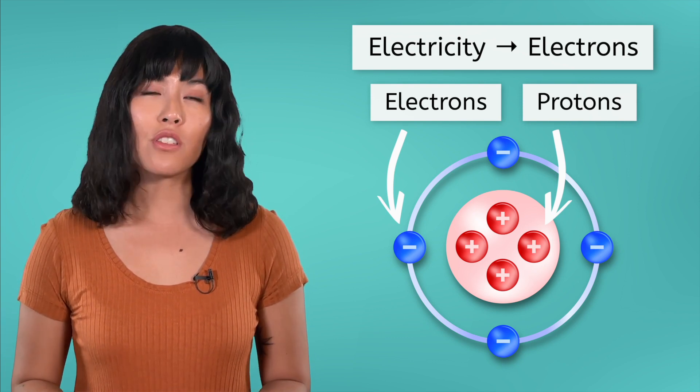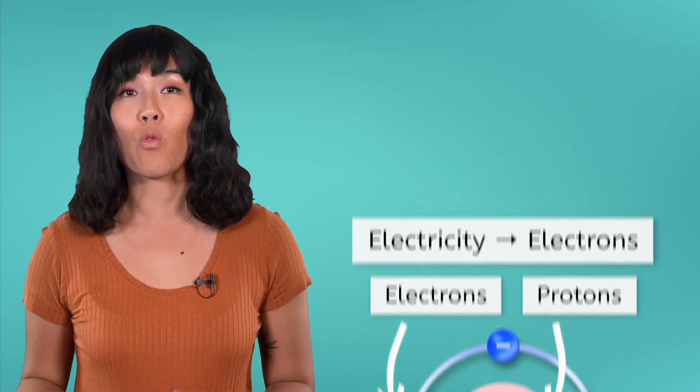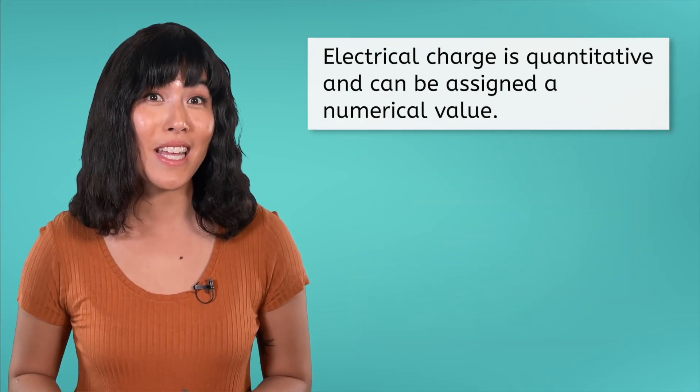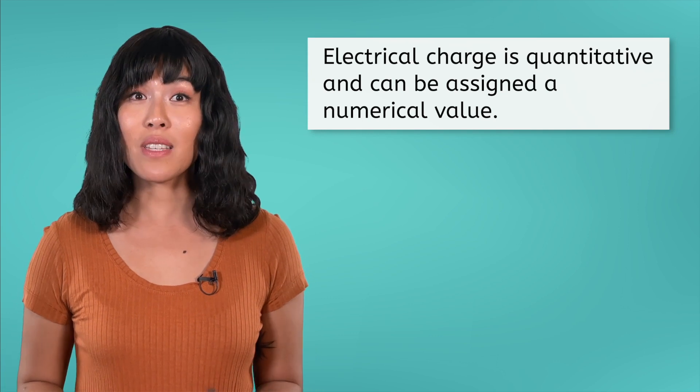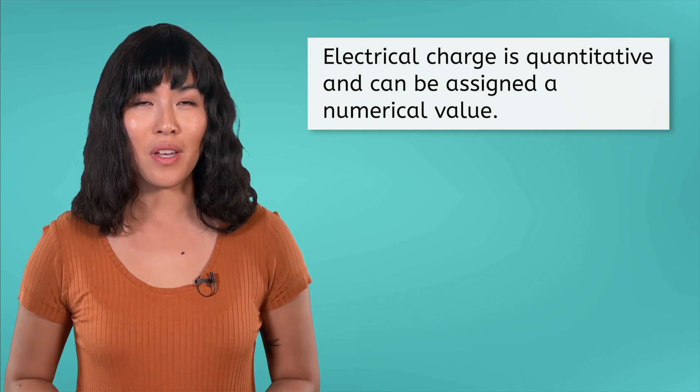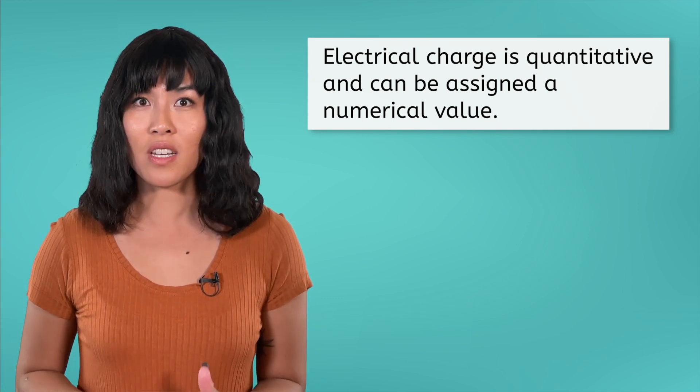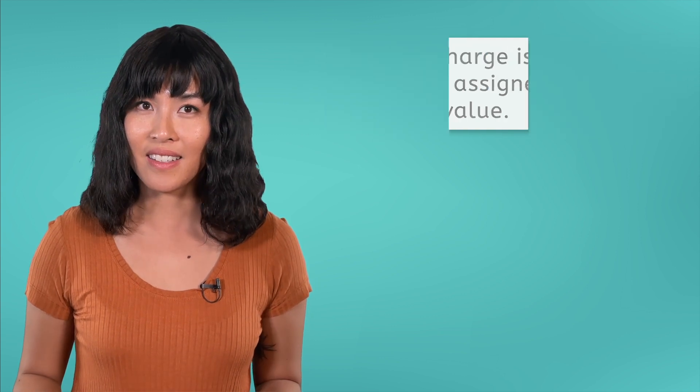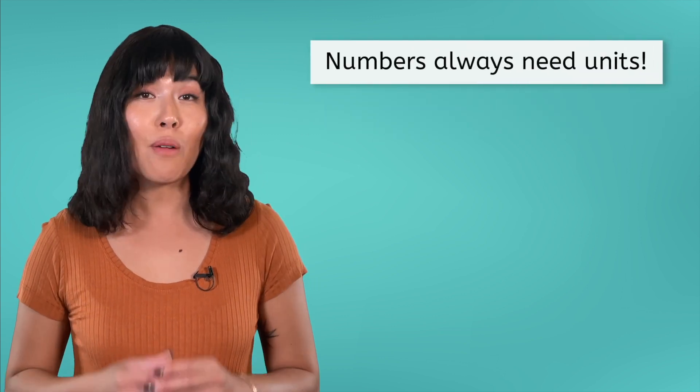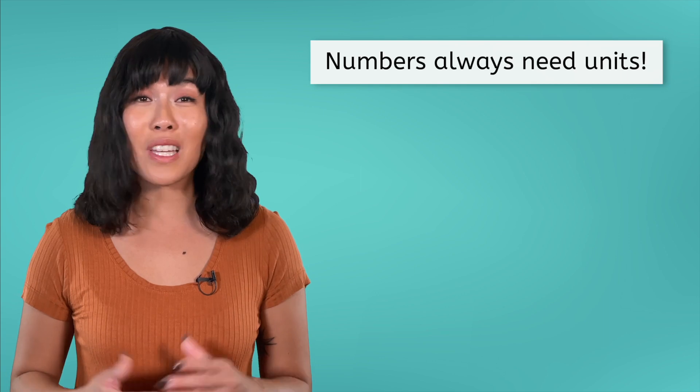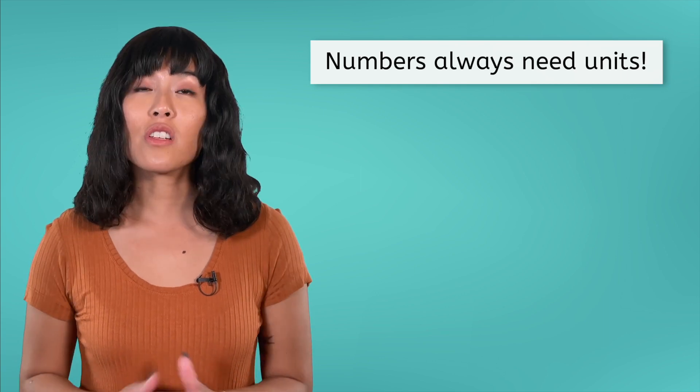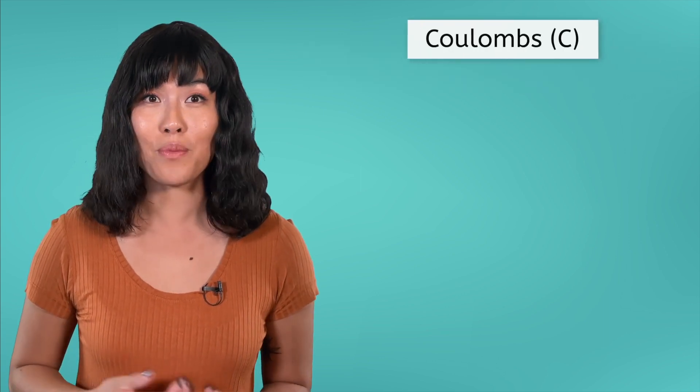While we often just describe charges as positive or negative, charge is actually a quantitative property, meaning it can be assigned a numerical value. But anytime we measure something with a number, what else is needed? A unit. Numbers always need units, or they don't mean anything. Charge is often measured in a unit called coulombs.